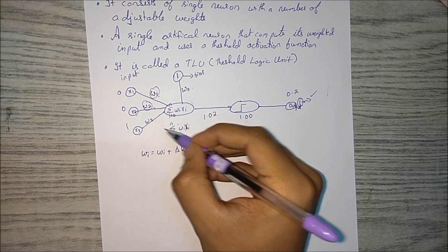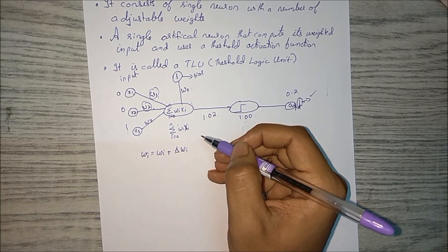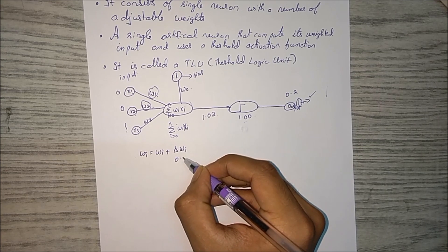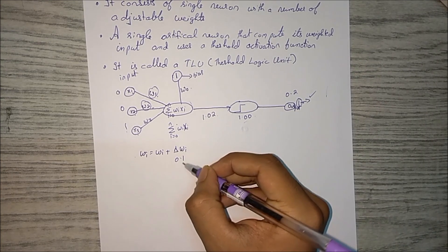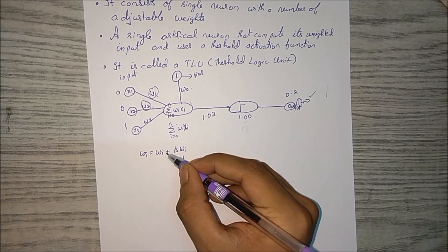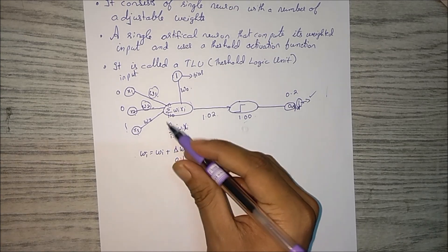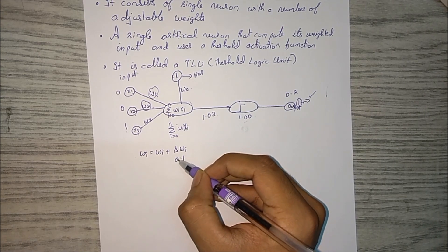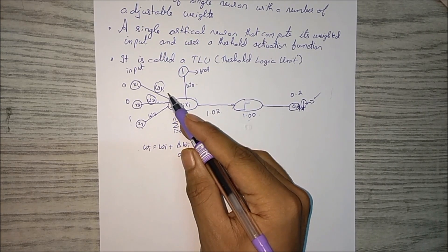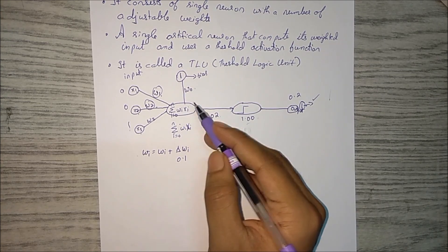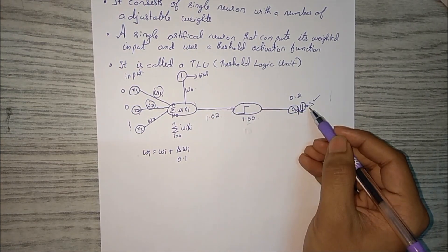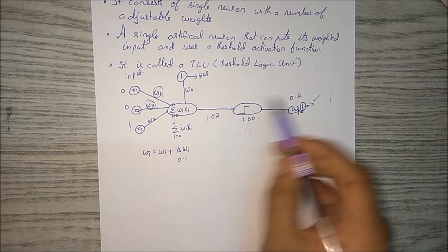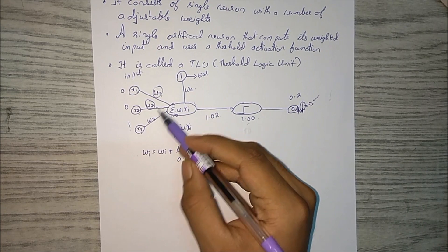So when we change the weight we have to change it in a small proportion. We change with a small proportion, say 0.01. If w1 was 0, then it will be added to 0.1 and the new weight will be 0.1. So next the same process repeats and we'll check the output. If the output is related to the input, if not, again adjust the weights. This process goes on.